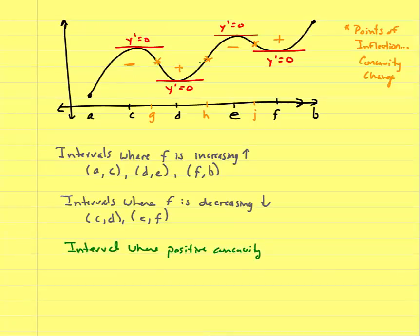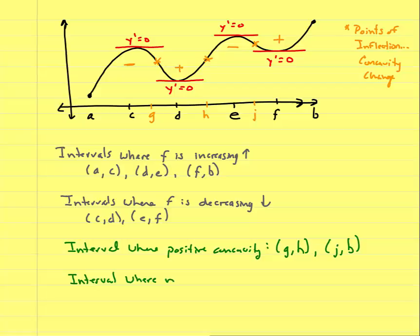Looking at intervals of positive concavity: positive concavity occurs from G to H (open intervals, since G and H are inflection points), and from J to B. For negative concavity, there is one interval from H to J. Concavity is the idea of whether the graph is opening up or down — it doesn't have to do with the first derivative slopes of tangent lines.